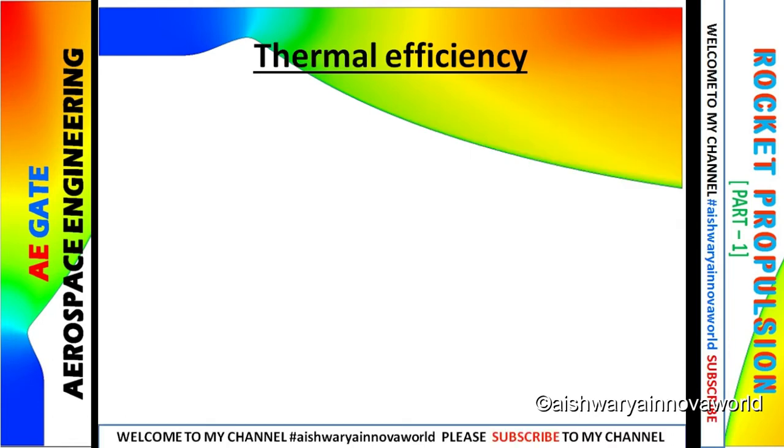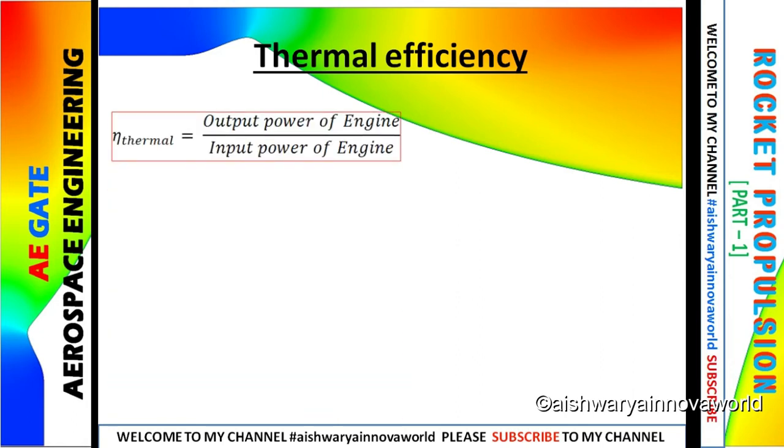Now comes thermal efficiency. Thermal efficiency is the ratio between the output power of the engine by the input power of the engine, which can be written as eta thermal equals to ve square plus u square by 2 cv. Ve is effective jet velocity, u is forward velocity or flight velocity, and c is heat added or calorific value.